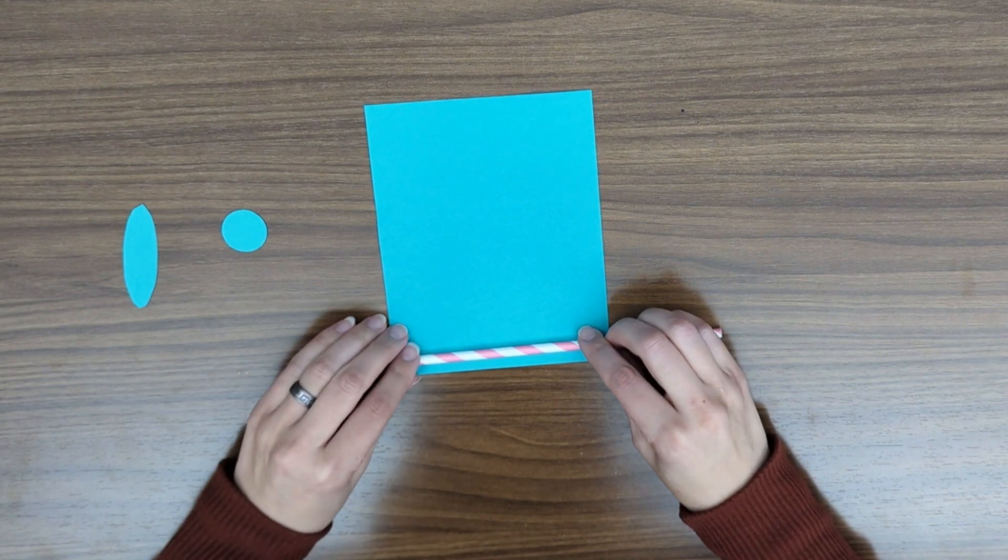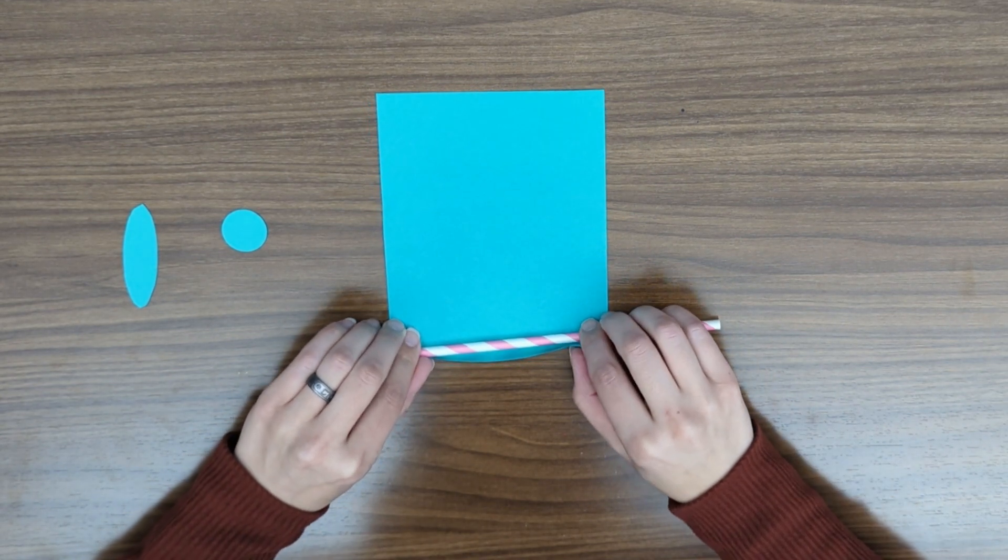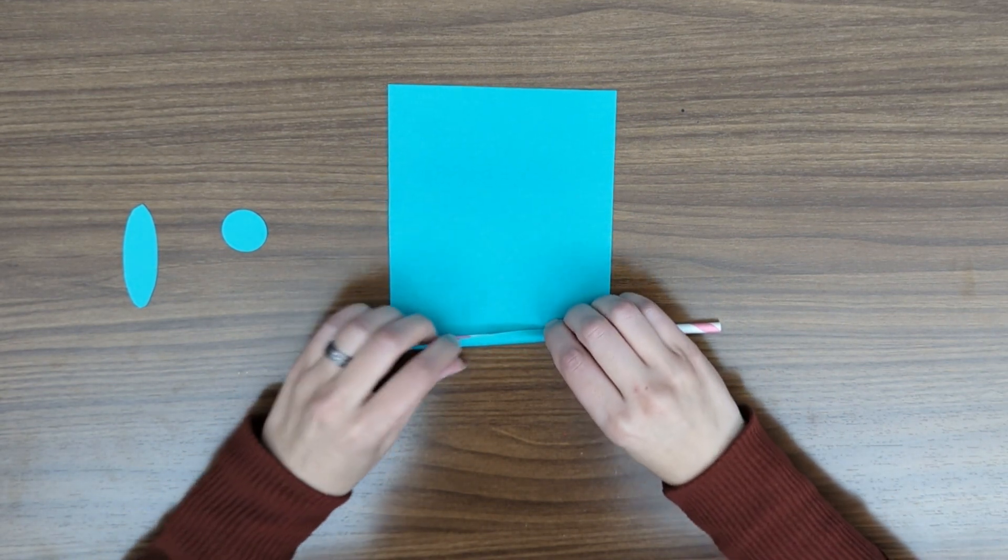Now that we have all our supplies, let's make our project. For our first step, we're going to take our rectangular piece of paper and roll it around the straw. It doesn't have to be super tight, so you don't have to worry about that. Just make sure that you wrap it all the way around and you just keep going.